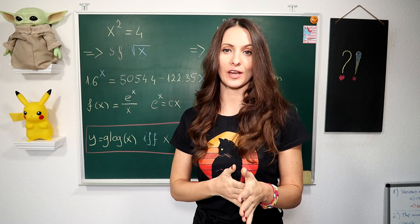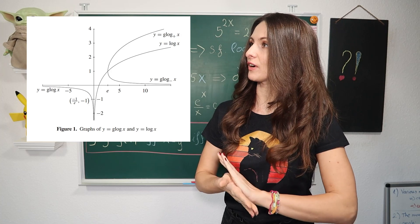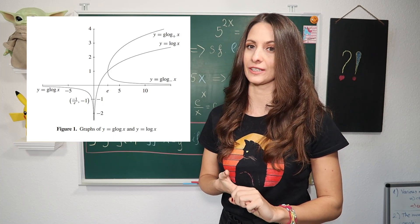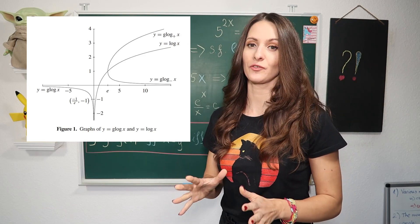Now let's see how the graph of the g-log function looks like. On this graph, you can see the logarithmic function and the g-log function. Notice for x < 0, the g-log function is well-defined and negative.